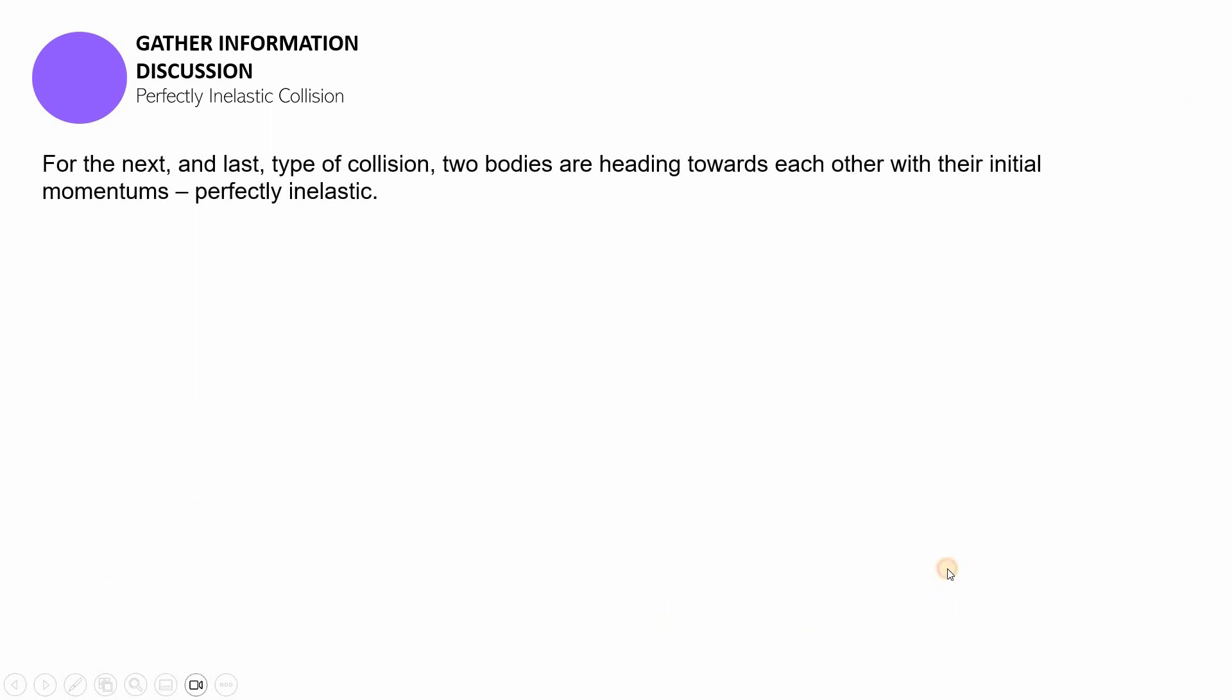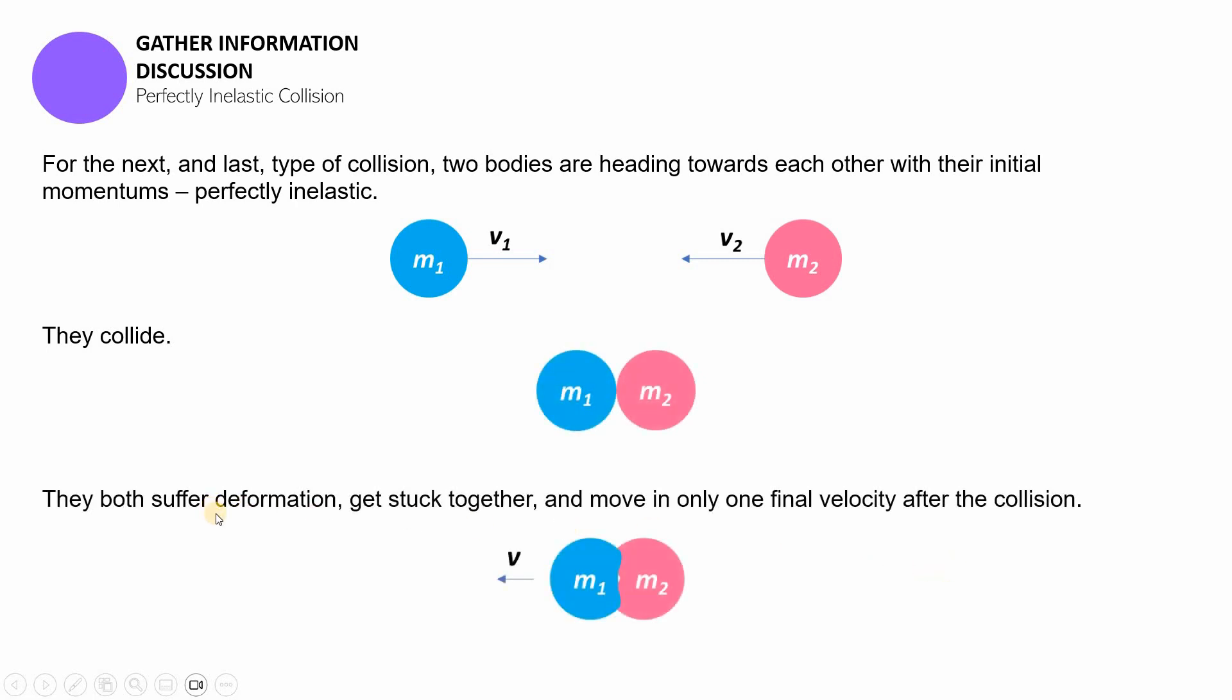Let's now begin. Perfectly inelastic collision is the last type of collision where two bodies that are heading towards each other collide and what's gonna happen is there will be deformations and those deformations are going to make them stick with each other and then they're just gonna be moving with one final velocity.